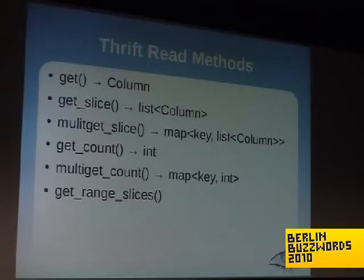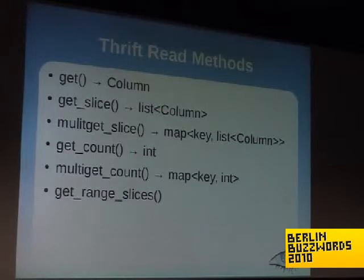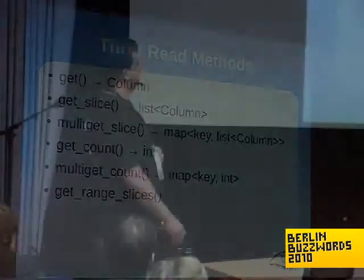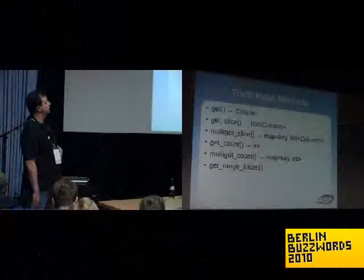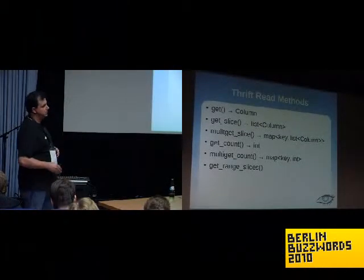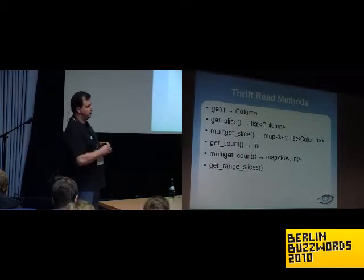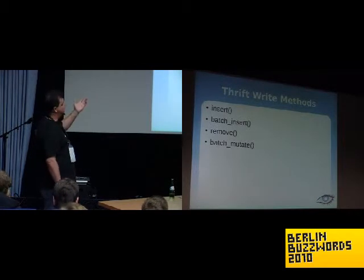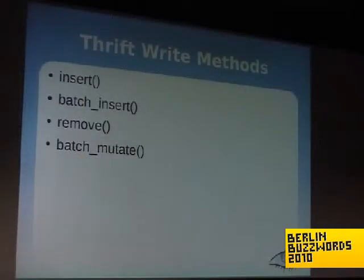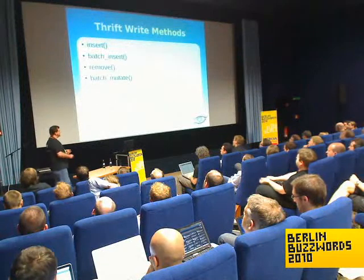A quick look at the read methods: you can do a get — given a key, column family, and column name, it returns a column. A get_slice takes similar parameters but uses a predicate instead of a column name, maybe specifying a range, and returns a list of columns. You can do that for a set of keys, retrieve the count of columns in a row, or do that for a set of records. Get_range_slices, if you're using the ordered partitioner, lets you say 'for keys starting at foo and ending at bar, for all columns between x and y, return them all in one shot.' The write methods are straightforward: insert a single column, insert multiple columns at once, remove a column, and batch_mutate — which in the next version will deprecate batch_insert because it does what batch_insert does but also allows deletions, all in one shot.